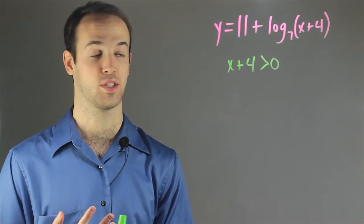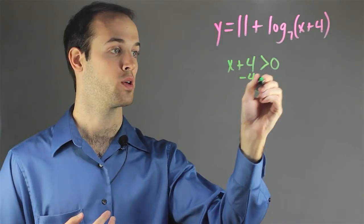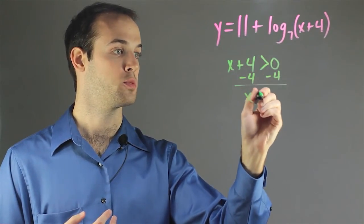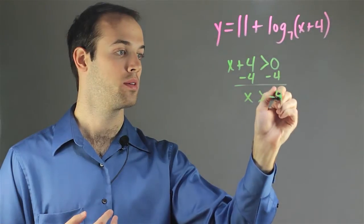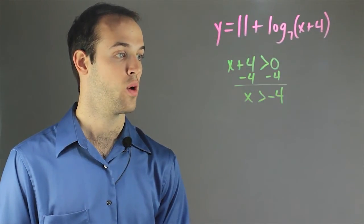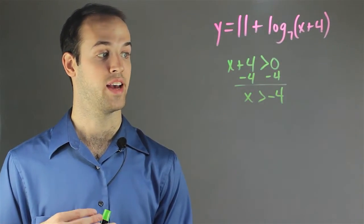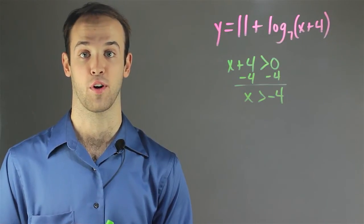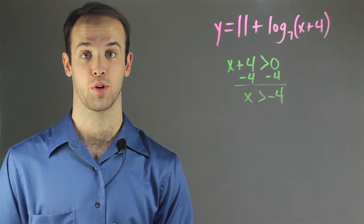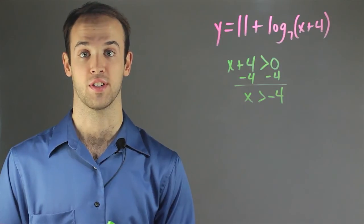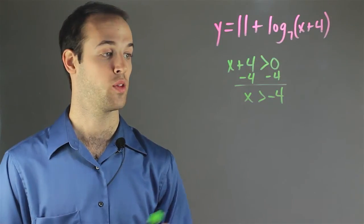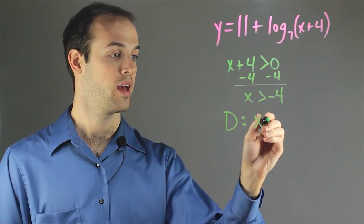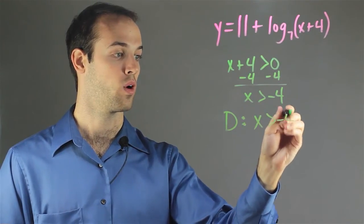So now I'm just going to simply solve the inequality — subtract 4 from both sides — and I get that x must be greater than negative 4. So I know that once the graph hits negative 4 as an x value, there's going to be a vertical asymptote that prevents the graph from going any further to the left. So I know that the domain must be x is greater than negative 4.